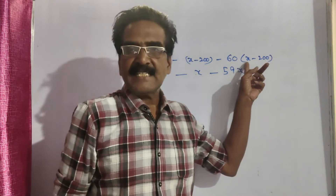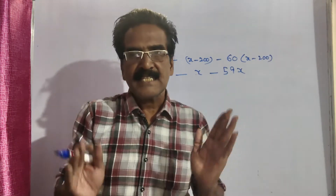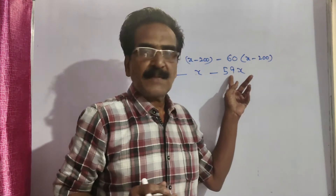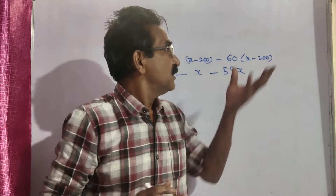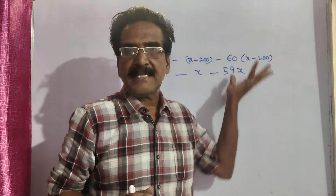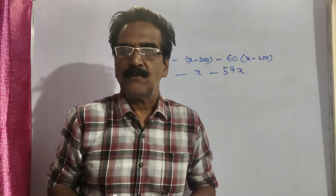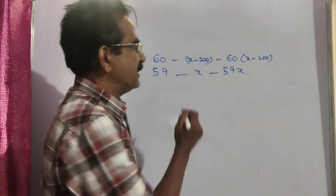Friends, 60(x − 200) is the sum of 60 students, and 59x is the sum of 59 students. So the difference between these two sums must equal 45 kgs — the weight of the student who left.